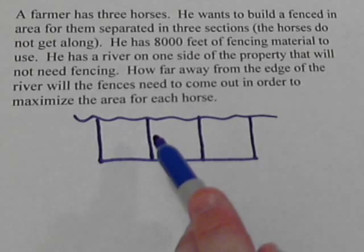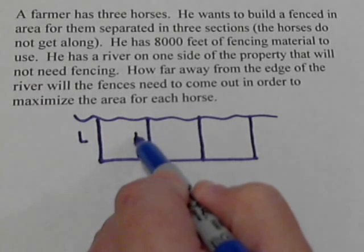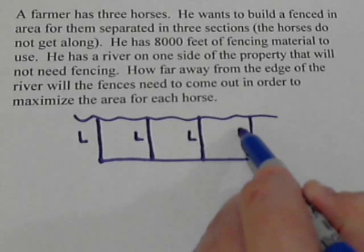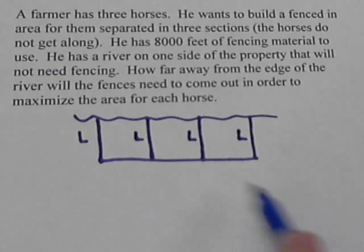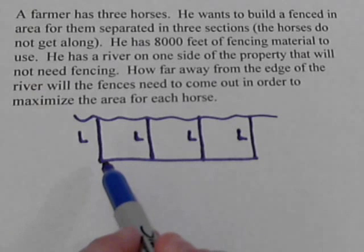And these four pieces of fencing here are all going to be the same. So we're going to call all of them L for length. Well, what do we have left over here? How long is this piece going to be?